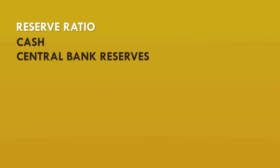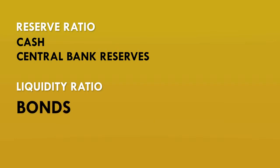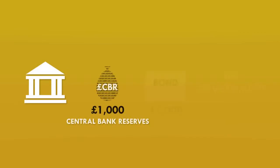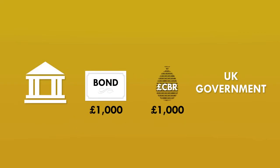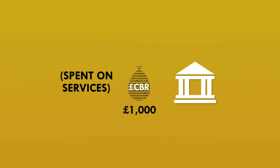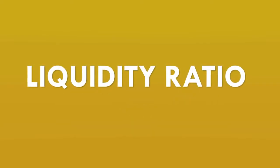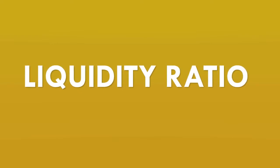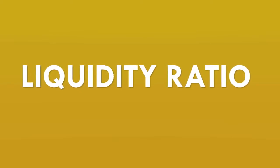While the reserve ratio used in the textbook model of banking requires banks to hold cash and central bank reserves in proportion to the total balances of their customers' bank accounts, a liquidity ratio actually allows the banks to use that cash and central bank reserves to buy bonds. The bonds also count towards the liquidity ratio, meaning that the bank could hold no cash or central bank reserves at all and still meet the ratio. The key detail here is that when a bank uses central bank reserves to buy bonds, the central bank reserves then belong to another bank — they're not removed from circulation, they're still circulating through the system. This means that a liquidity ratio has no limiting effect on the total amount of money that the banking sector as a whole can create.